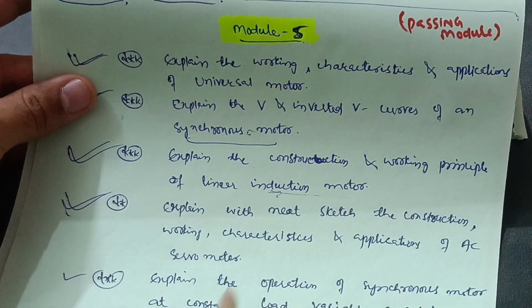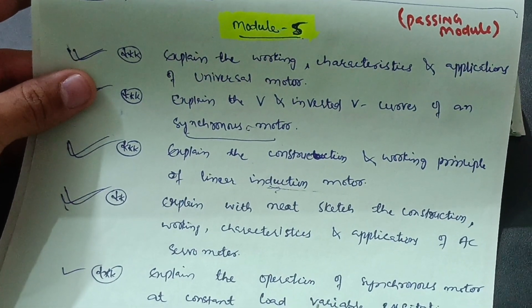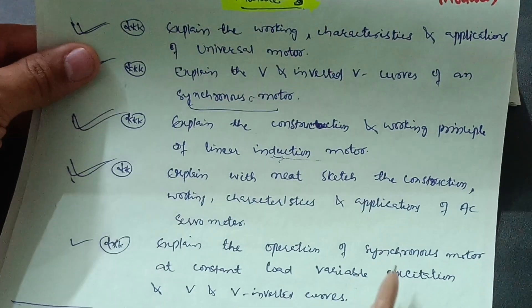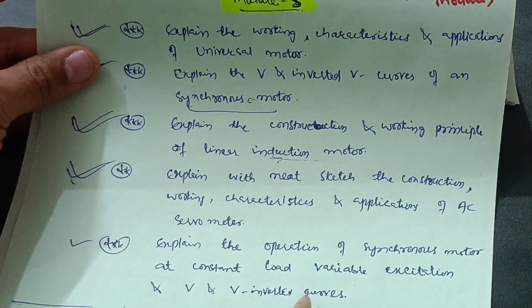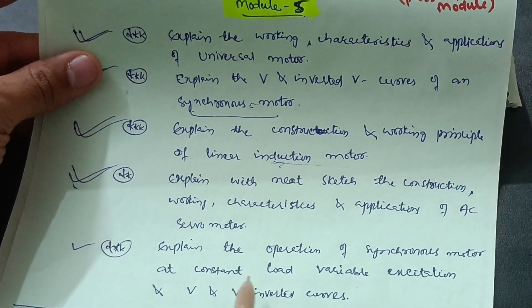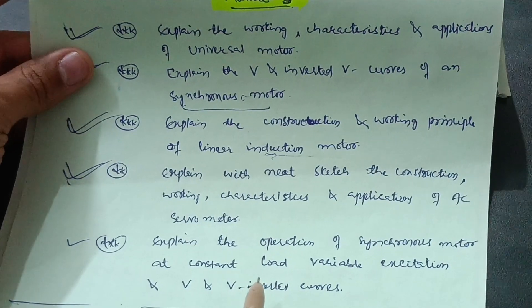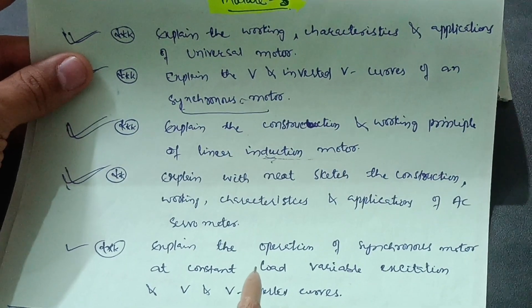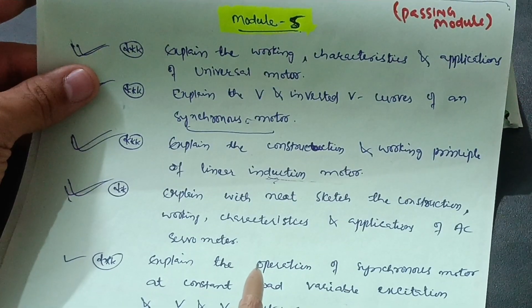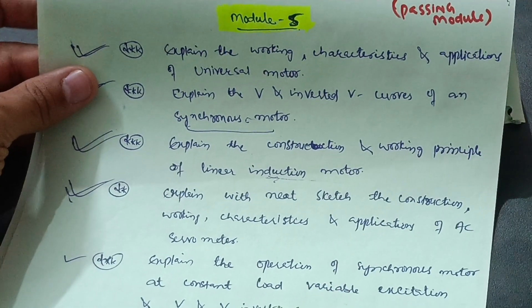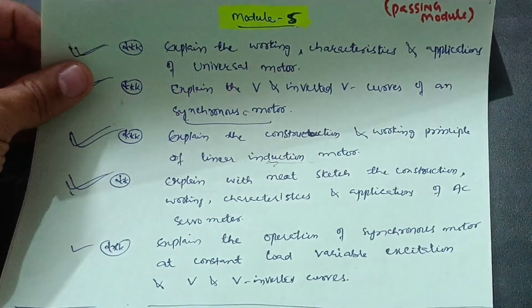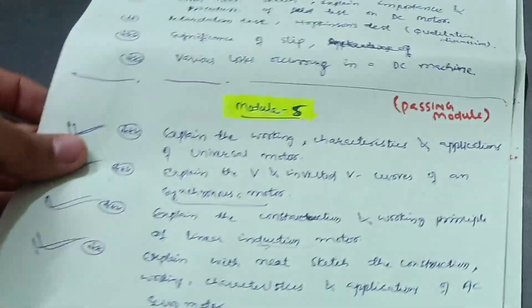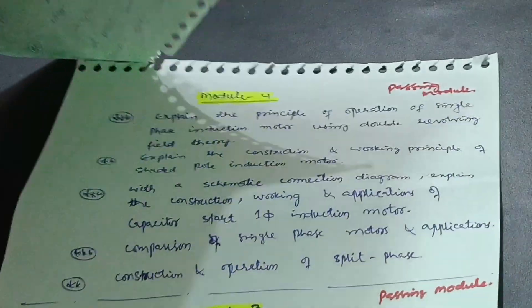Another important question is: explain the operation of a synchronous motor at constant load with variable excitation and V and inverted V curves. These six questions allow you to score 20 marks in module five. Just focus on this particular module more than the rest — it is a passing module.